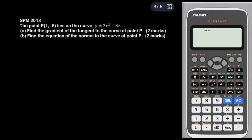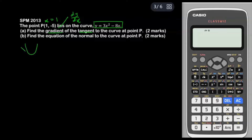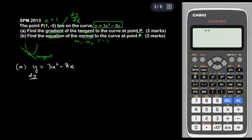This question is from SPM 2013. Point P(1, -5) — so X equals 1 — lies on the curve Y = 3X² minus 8X. Part A: find the gradient of the tangent, which means finding DY/DX when X = 1. A tangent is a straight line that touches the curve at only one point. Part B asks for the equation of the normal to the curve at point P.